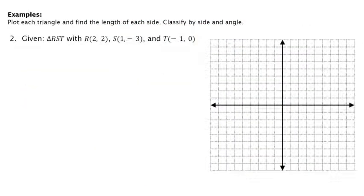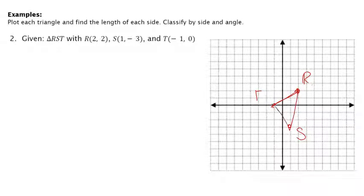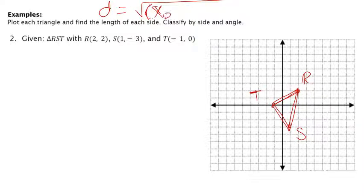For the next problem it's the same process. We have point R at (2, 2), point S at (1, -3), and point T at (-1, 0). You could use Pythagorean Theorem, but I'm going to use the distance formula because it's a little faster and avoids drawing extra triangles within the triangle.